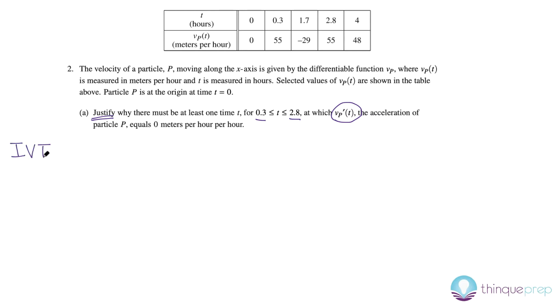We can use IVT, which is the intermediate value theorem. We can use MVT, which is the mean value theorem. Or we can use Rolle's theorem, which is actually just a more specific version of the mean value theorem when f(b) minus f(a) is equal to 0.